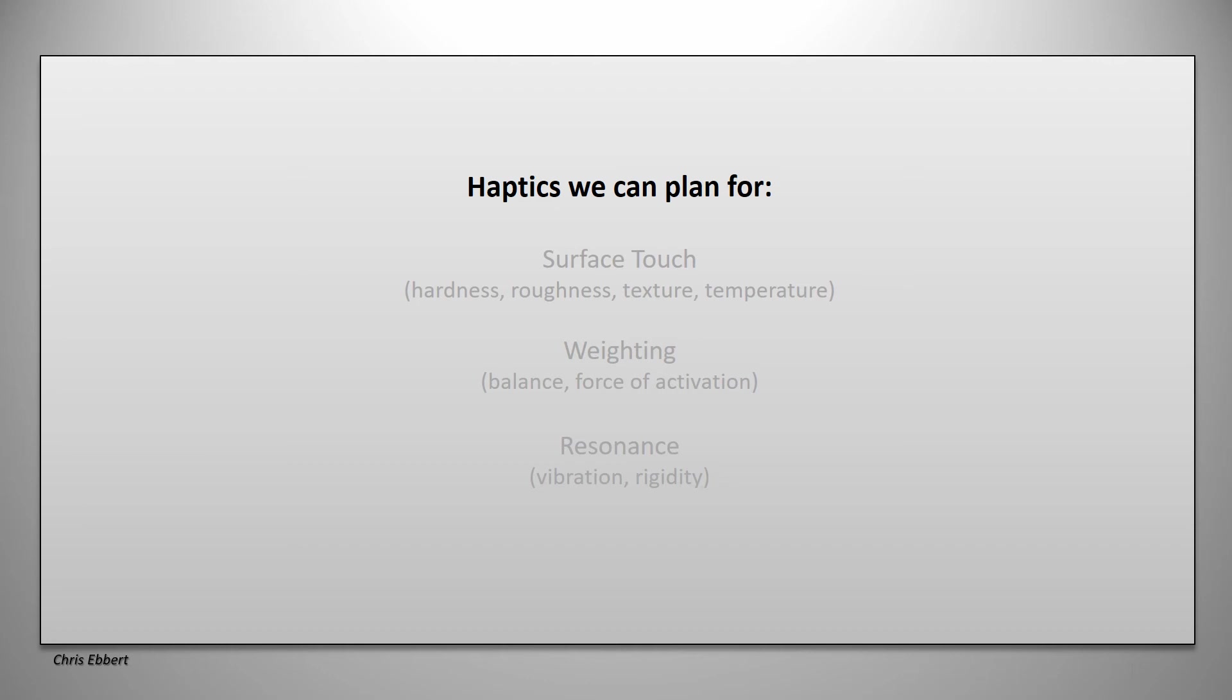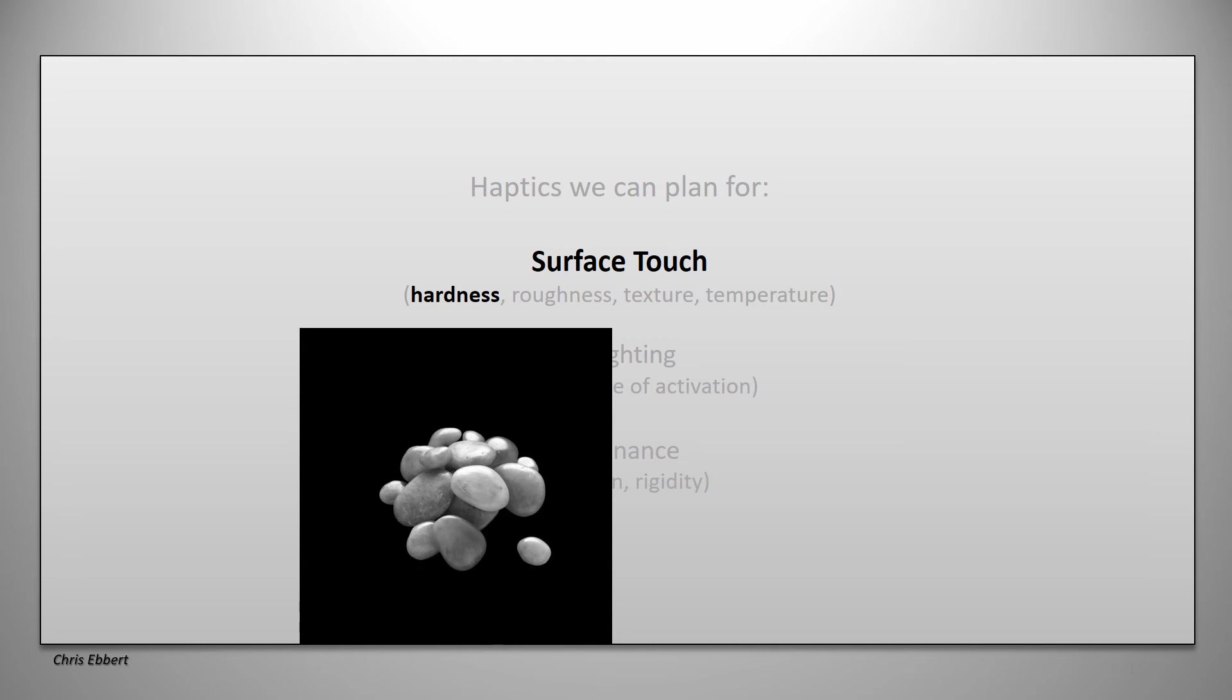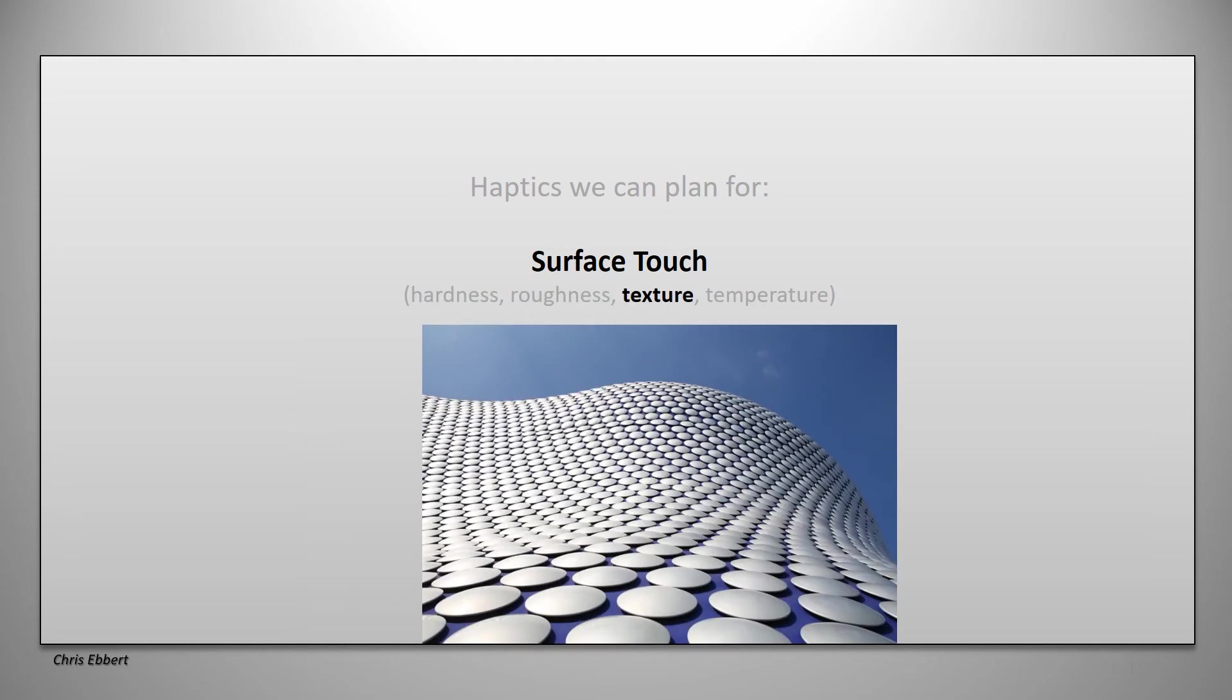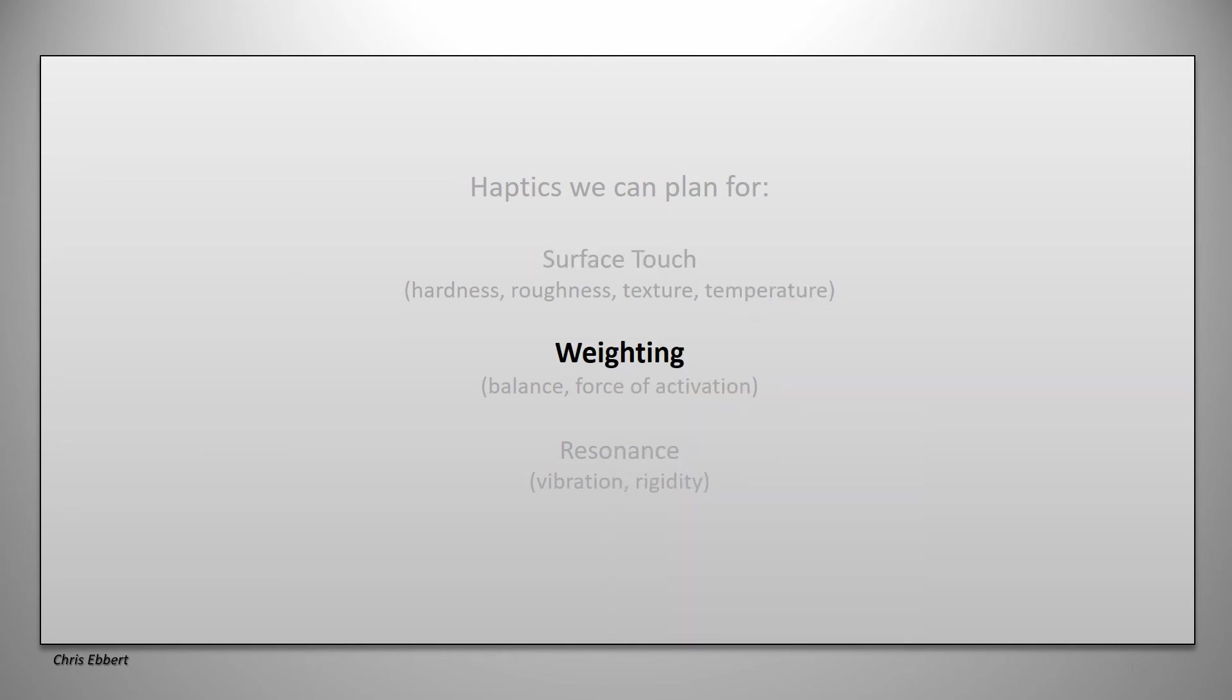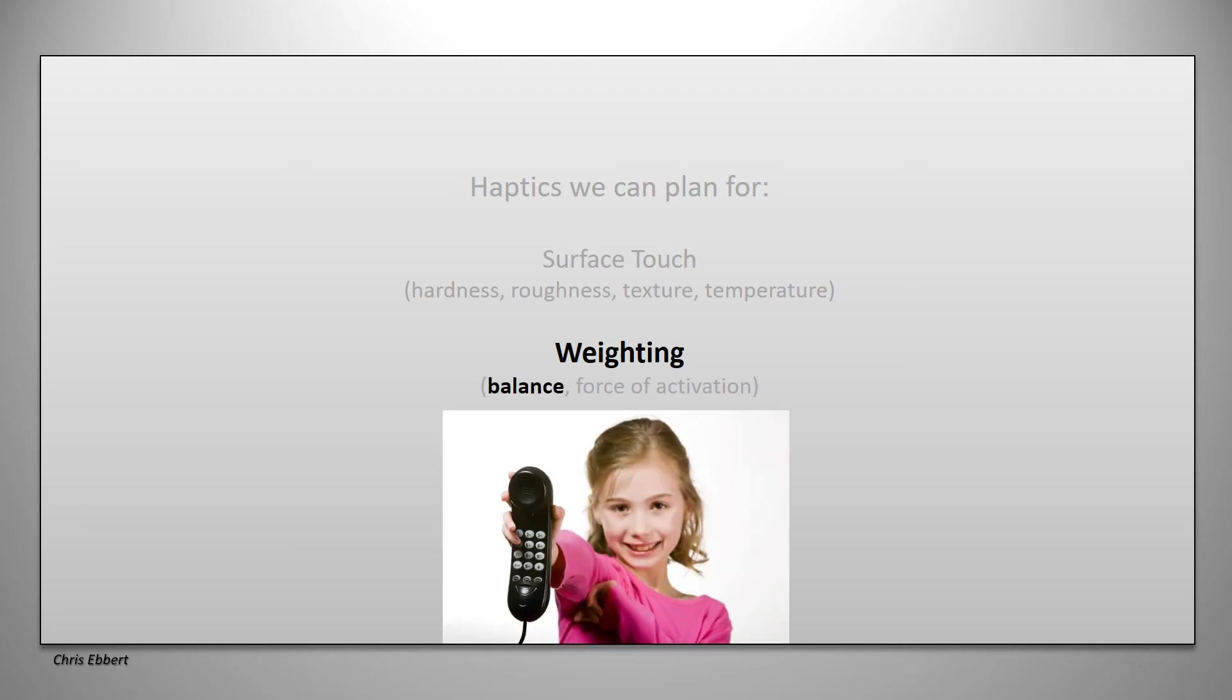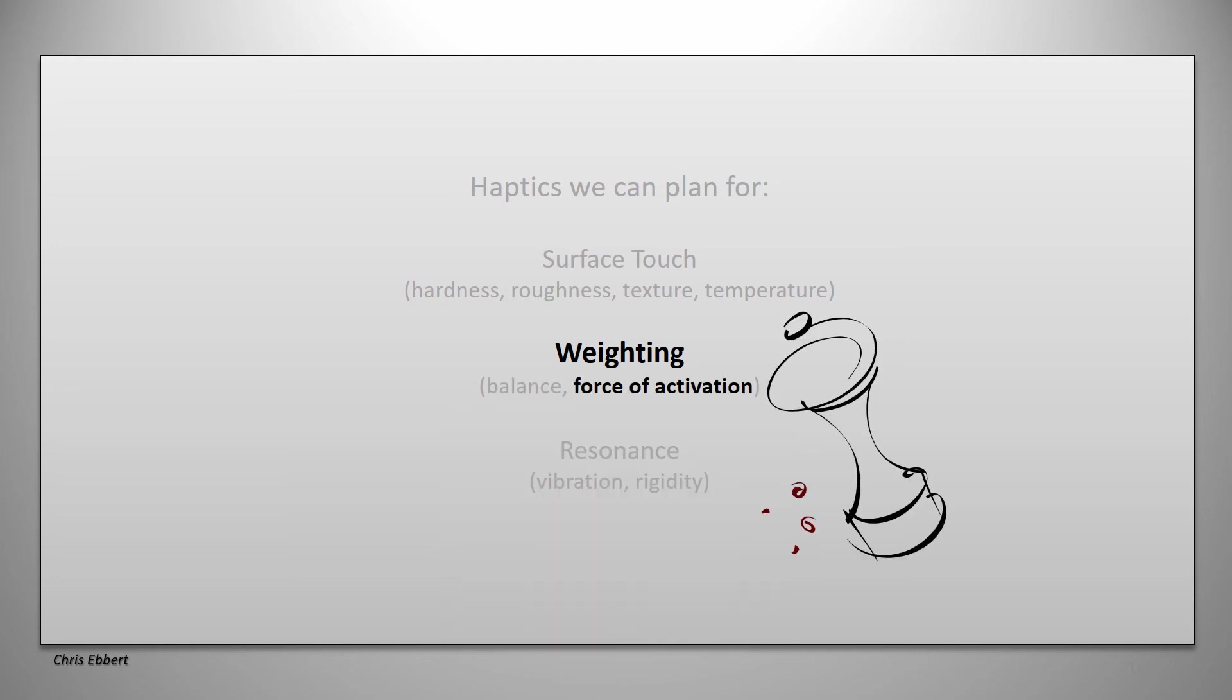Now, haptic engineering. This is about making it right to the touch. You can plan your surface touch. You can make it hard, rough, give it a texture or even a temperature, if you will. If you touch wood, it feels different than touching metal, doesn't it? Because of the conductivity of the material. And you choose that.